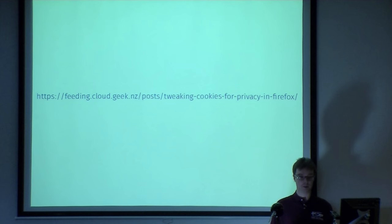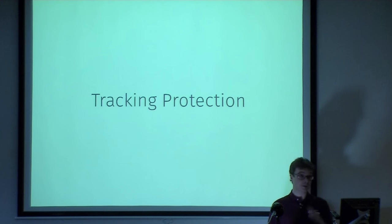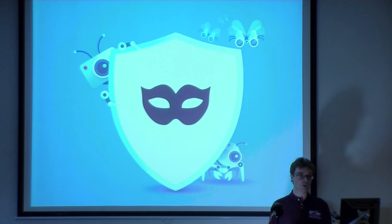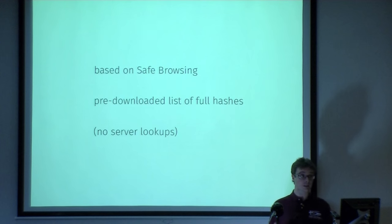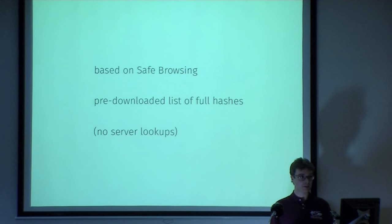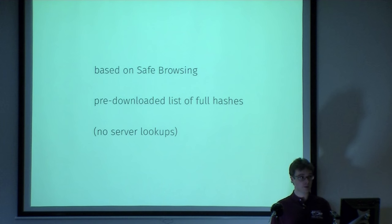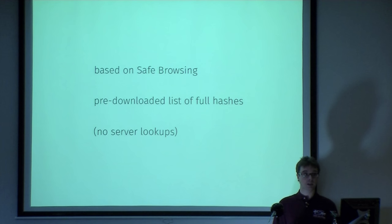Firefox also has something called Tracking Protection to protect against tracking. It's enabled by default in private browsing mode. When you go into private browsing mode, it will actually kill the network connections of all of these trackers. It's a mechanism very similar to safe browsing — we prevent those things from loading. It uses the same kind of safe browsing code, except the difference is that we don't have partial hashes here, we don't have hash prefixes. We have full hashes. We download a list of trackers — it's entirely local and there's no need to go to a server to ask for full hashes because we have them all already.